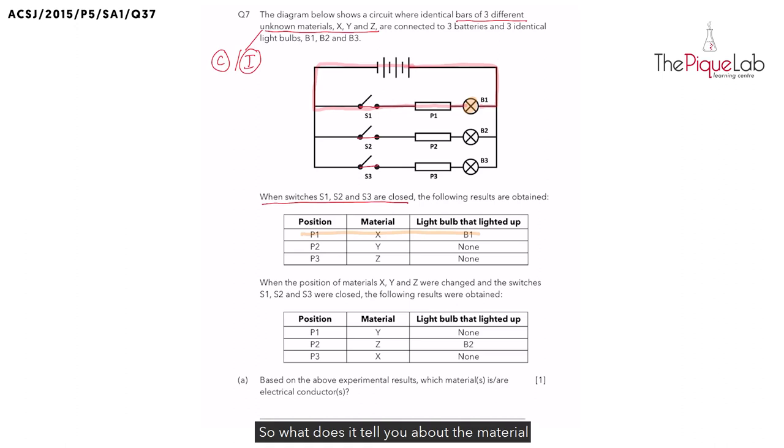So what does it tell you about the material that's at position P1? Material X here. Did it allow electricity to flow through? Yes it did. So that material X must be a conductor of electricity. I'm going to put it down.